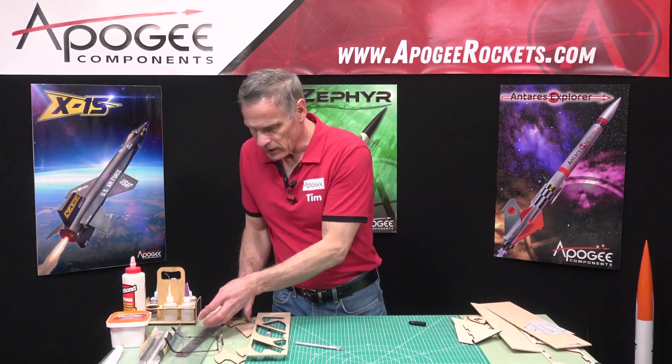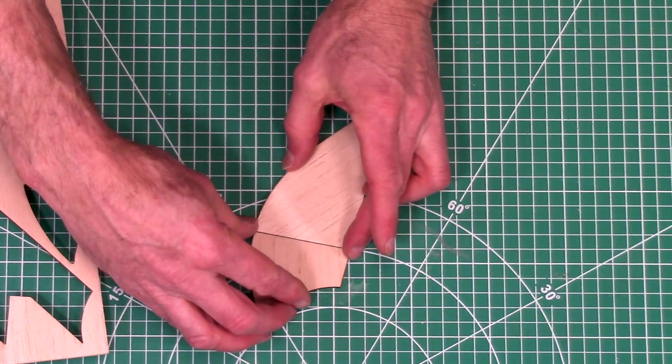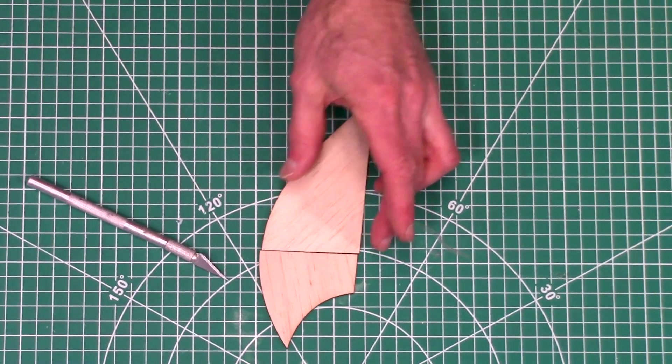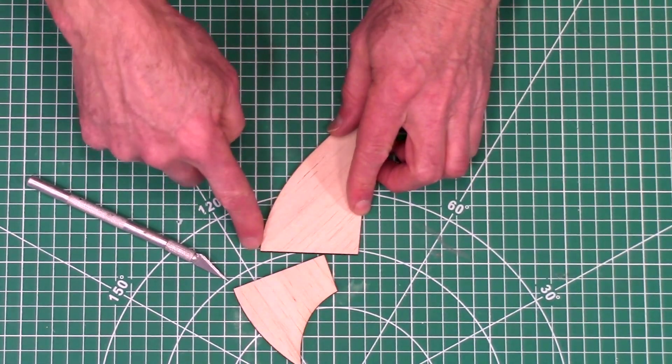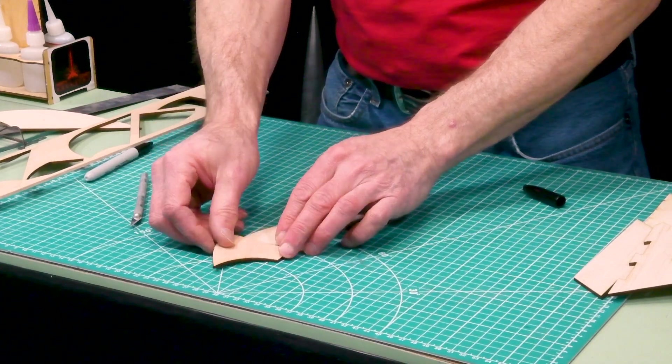So on this fin here, it's the same fin, but we cut it in two directions. We split it right here. For the reason is now we can make this the bottom edge of the fin so that that lands first.